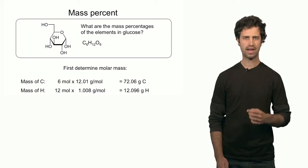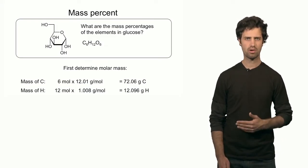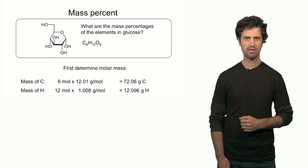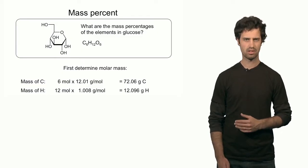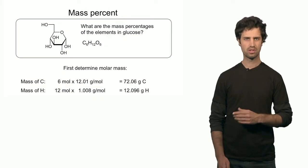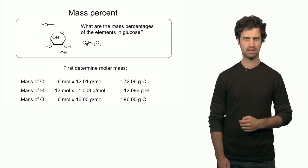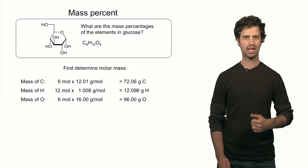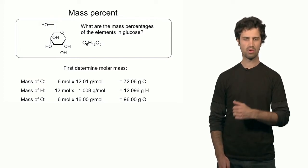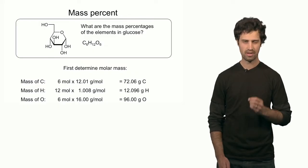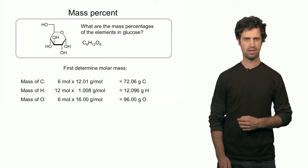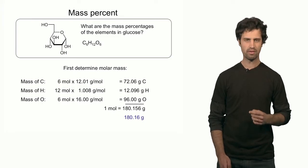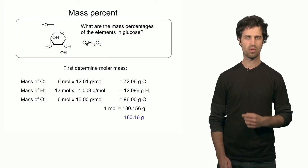There are 12 hydrogens in glucose, meaning one mole of glucose has 12 moles of hydrogen. 12 times 1 — the molar mass of hydrogen — gives approximately 12 grams, so hydrogen contributes 12 grams to one mole of the compound. There are six oxygen atoms in glucose, so one mole of glucose has six moles of oxygen. Six times the molar mass of oxygen gives 96 grams. Adding these up gives the molar mass of glucose: 180.16 grams per mole.